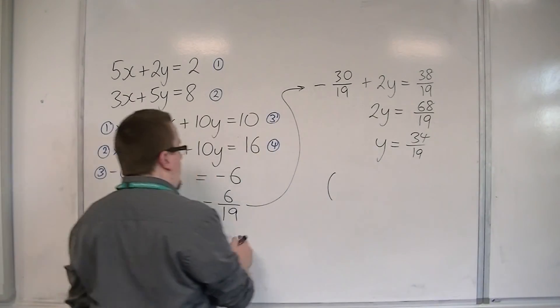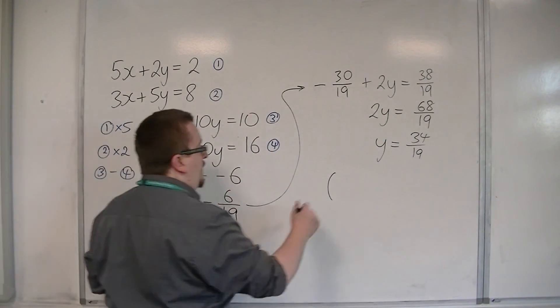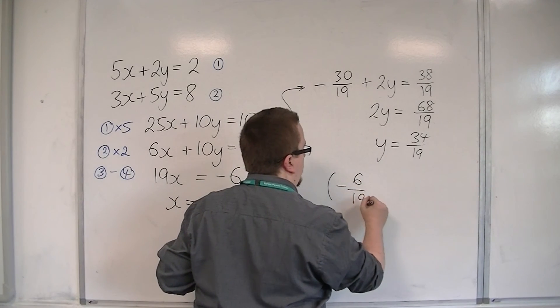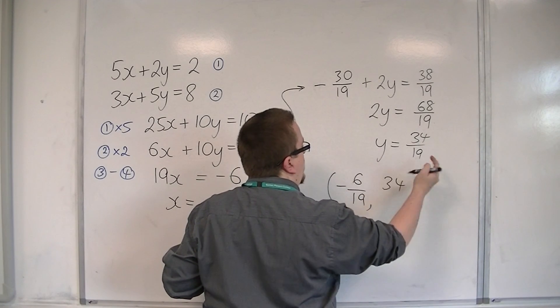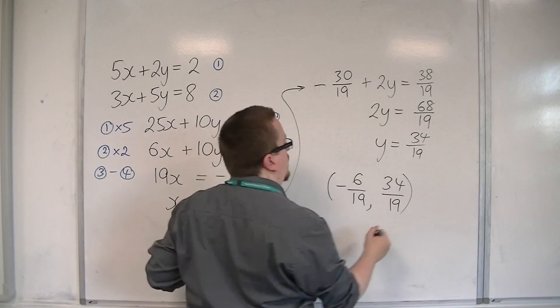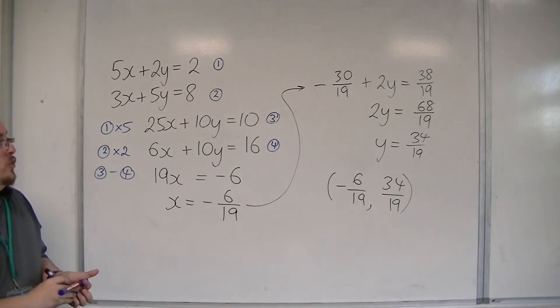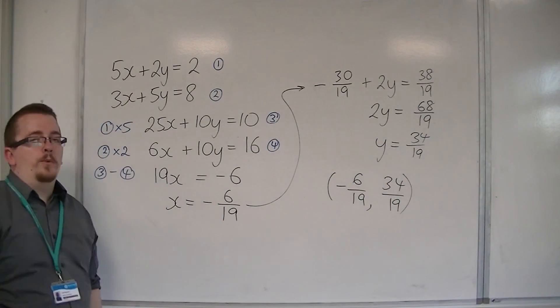The coordinates of the intersection is minus 6 over 19. And the y coordinate, 34 over 19. And that is the intersection point of the original two equations.